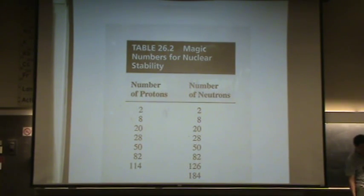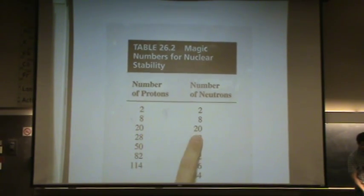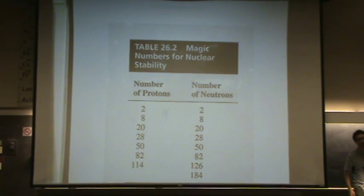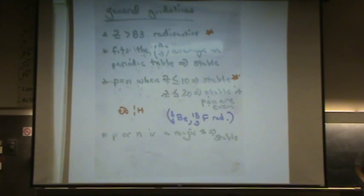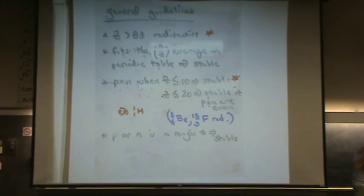Calcium is also double magic. It has 20 protons and 20 neutrons. That's a stable atom. So when they're double magic, it turns out that they're usually stable. Not always, but usually. Okay, if they're singly magic, they're also usually stable. All right, let's go on.